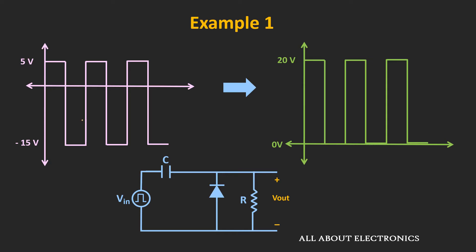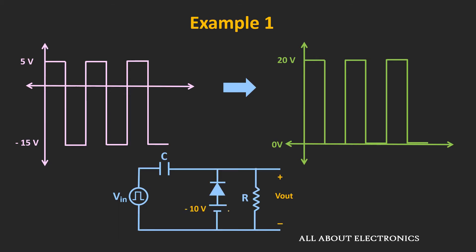The entire waveform has been DC shifted by 15V towards the positive side. But in this circuit, we also have a biasing voltage of minus 10V. So due to this biasing voltage, this waveform will get further DC shifted by minus 10V — or in other words, it will get shifted downwards by 10V. And due to that, if you observe the overall output waveform, then it will look like this.